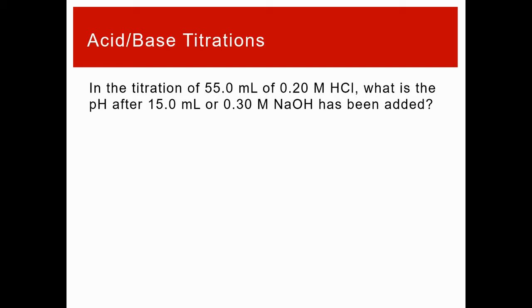Let's work through what's happening in between those points. In the titration of 55 milliliters of 0.2 molar HCl, what is the pH after 15 milliliters of 0.30 molar NaOH has been added? We want to figure out what is in solution and calculate the pH.